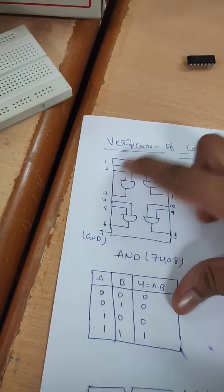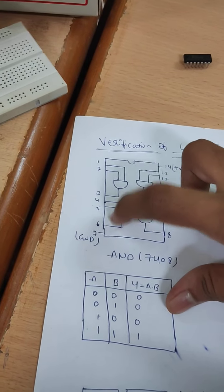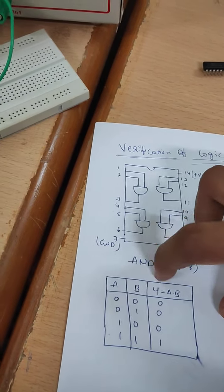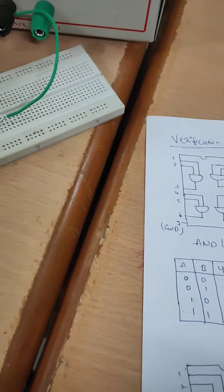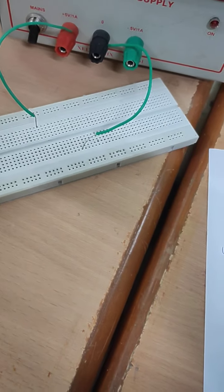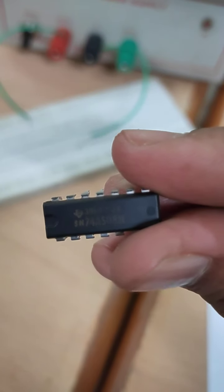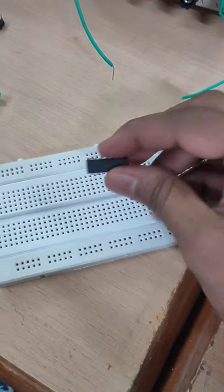In this 7408 IC consists of 4 gates, 4 AND gates. And this is the IC 7408. How to place your IC over the breadboard?